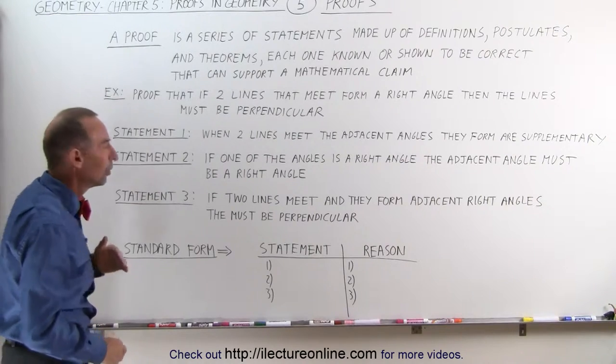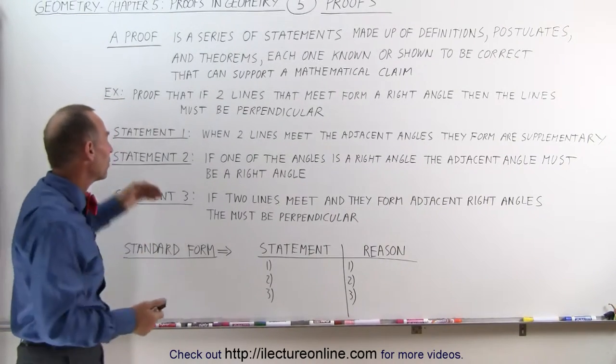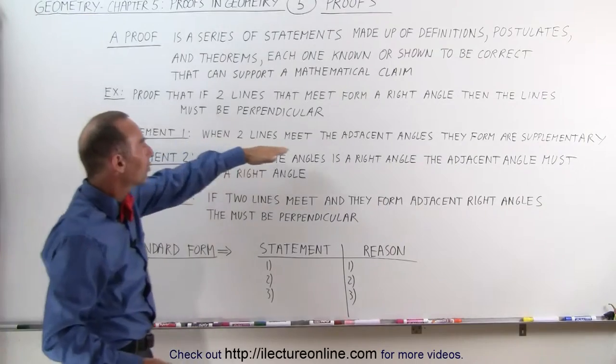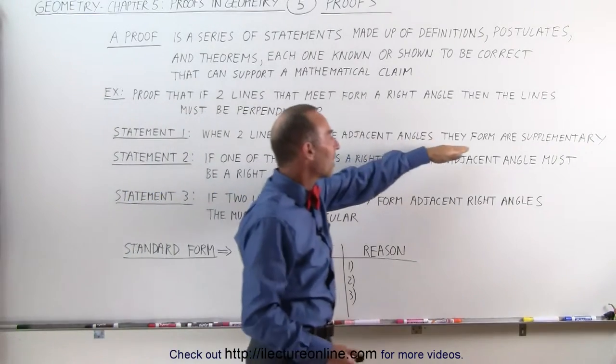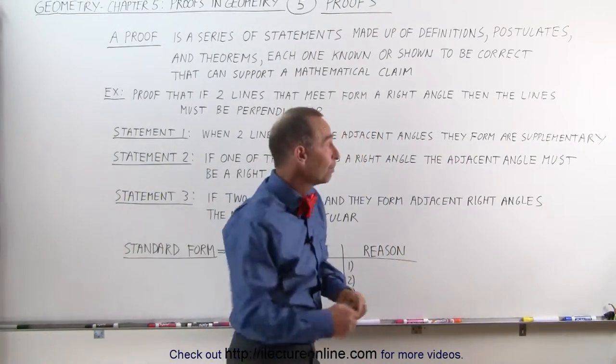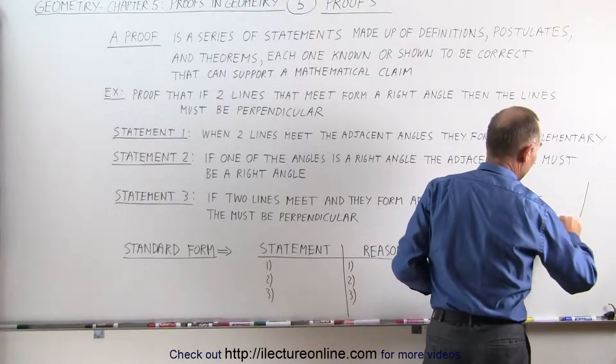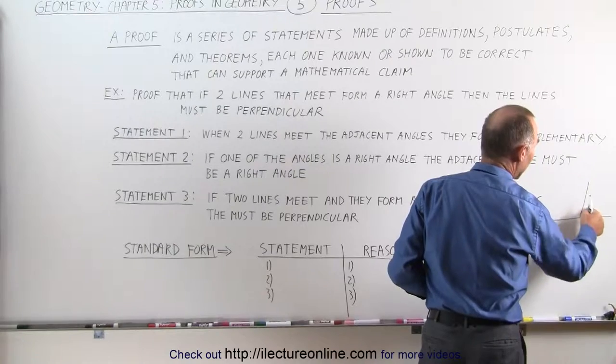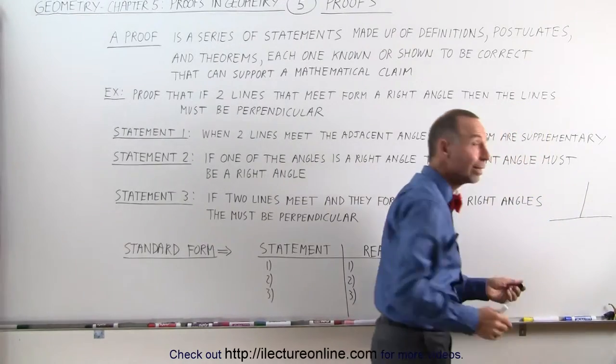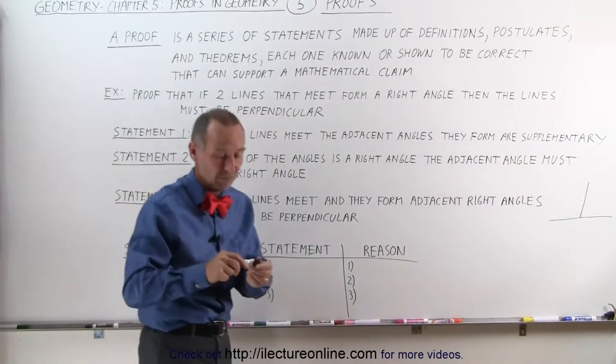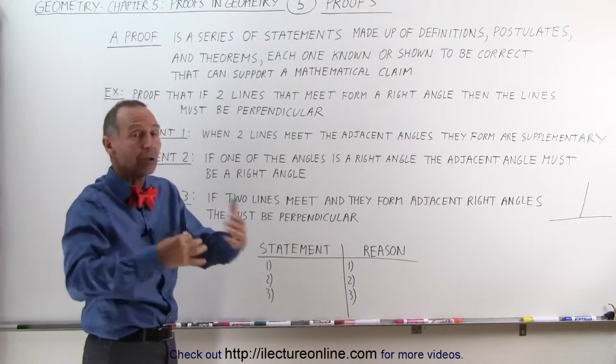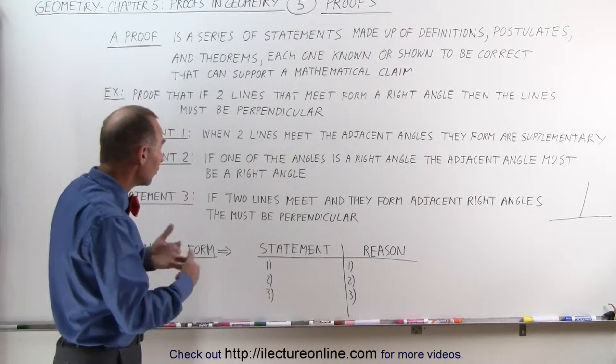So, here's an example. Here's three statements. Statement one: When two lines meet, the adjacent angles they form are supplementary. And we know that to be true. Here's one line. There's another line. They meet. The two adjacent angles add up to 180 degrees. Therefore, we know they're supplementary. We don't need to prove that. We know that to be true. That's a postulate.